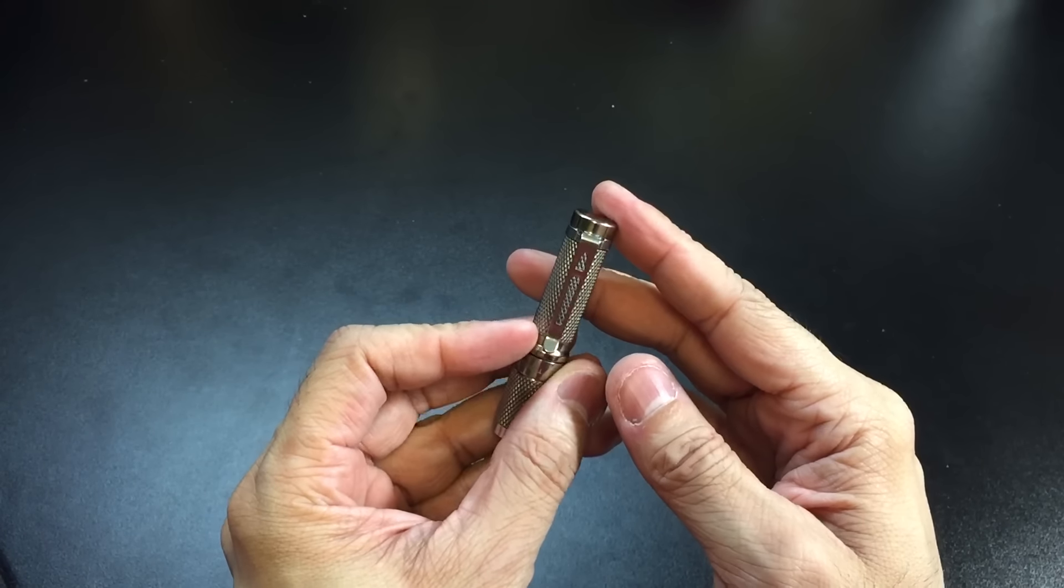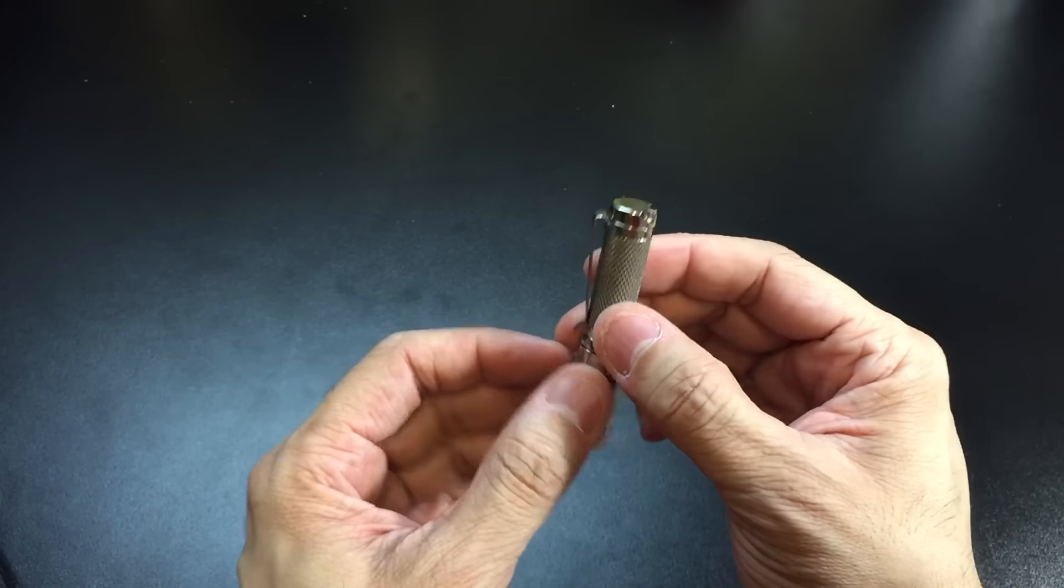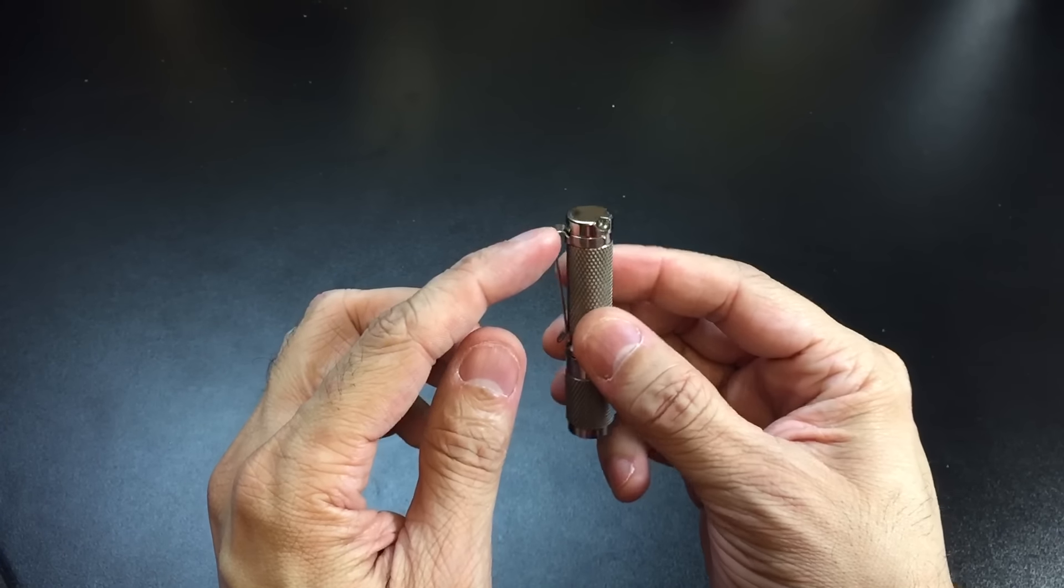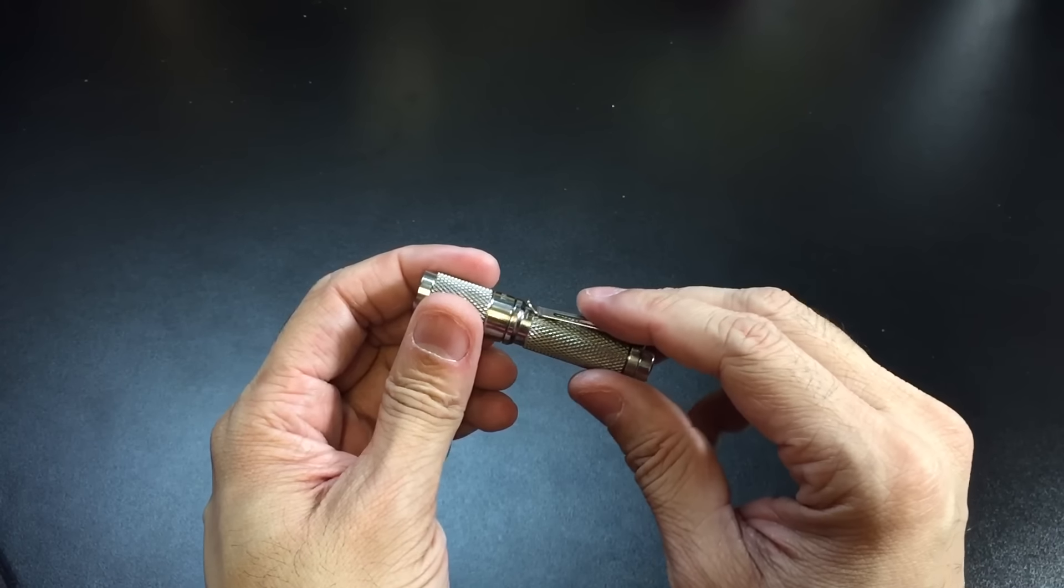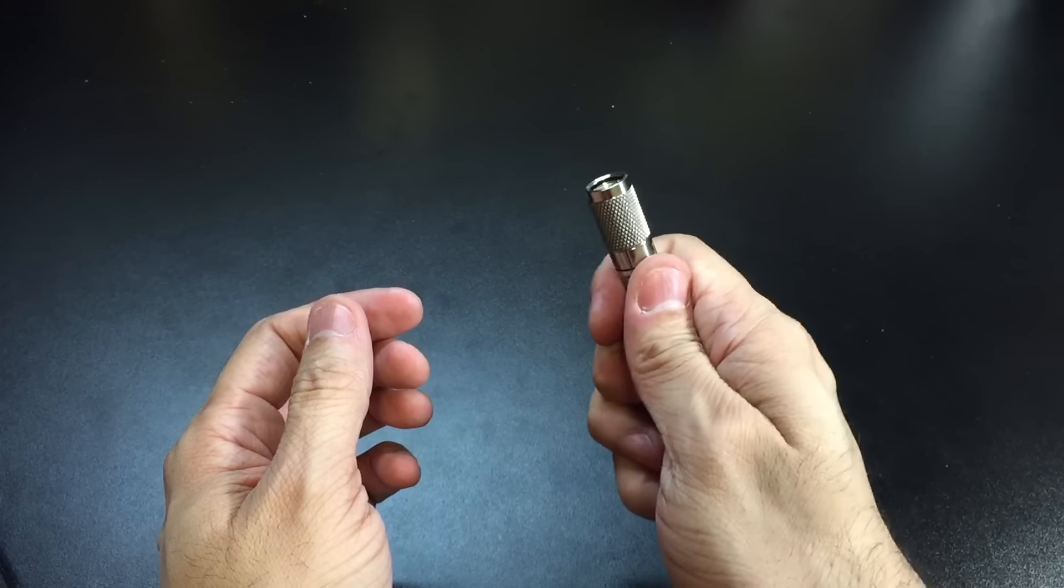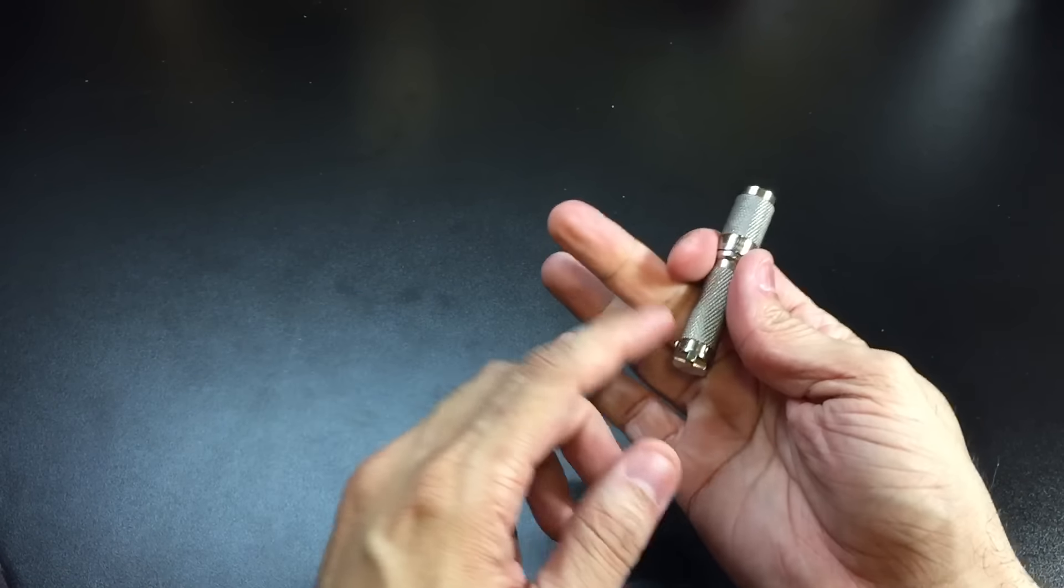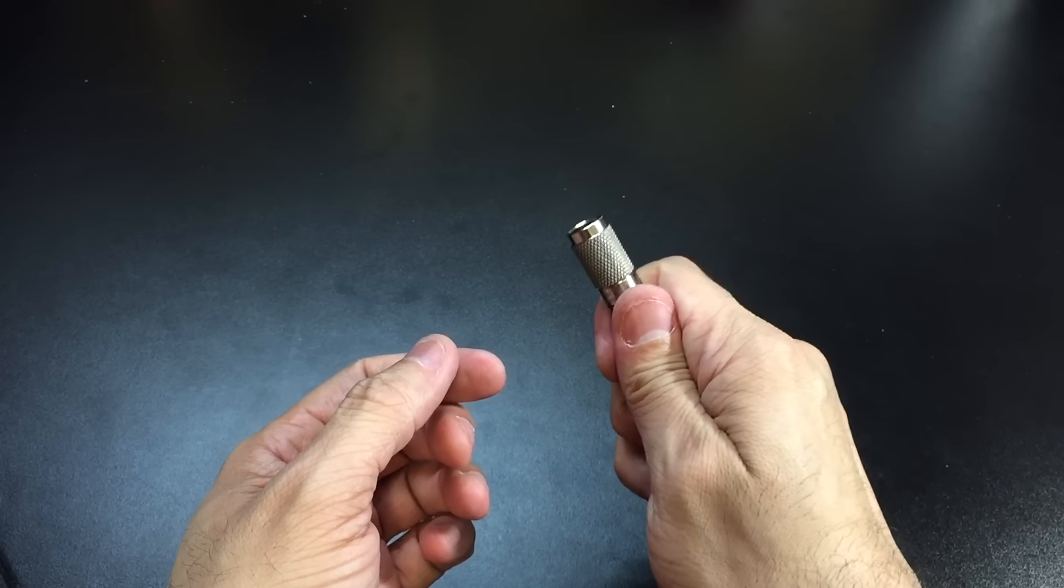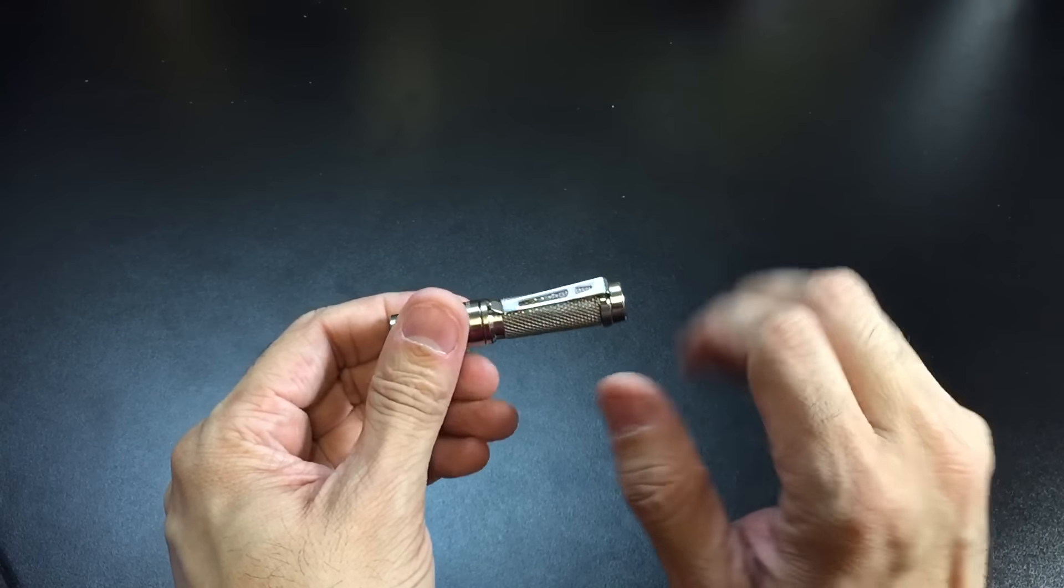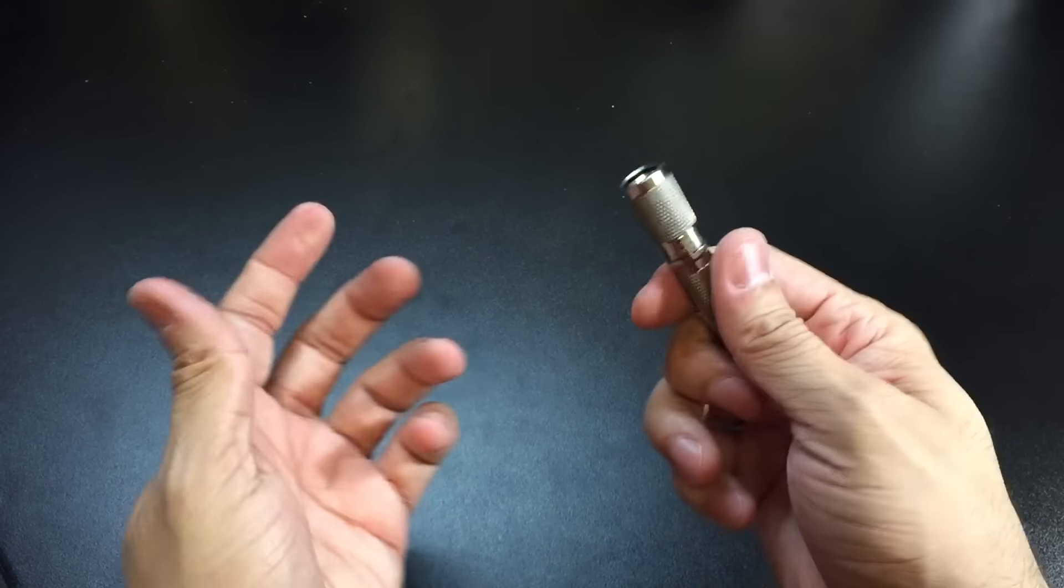But once you do, you can flip it around to the other side. And this is my preferred carry method on a light this size. The majority of the flashlight is going to ride very deep in the pocket once you have it clipped on there. What this also does is it gives you a little bit of extra something to hold on to the light. Because it is so light, you want to have as much grip on the flashlight itself. So the knurling does help and then the pocket clip gives you a little bit of extra help on there.